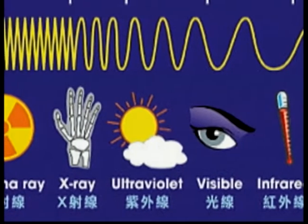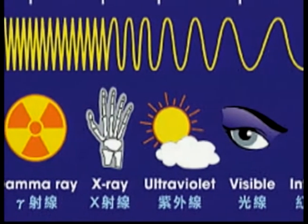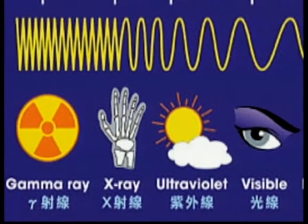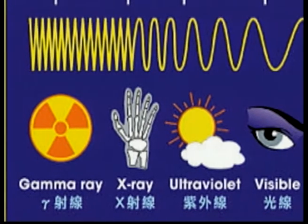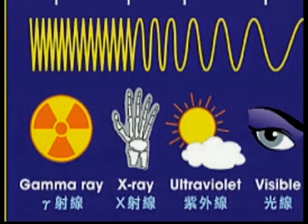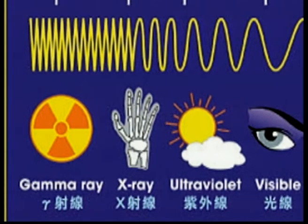Non-ionizing radiations are harmful to microorganisms, but can injure only the surface tissue of higher plants and animals. These radiations are also known to increase the rate of mutation among organisms. Light and radio waves are common examples of non-ionizing type.